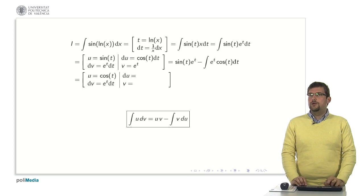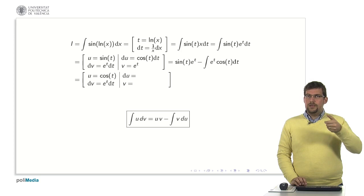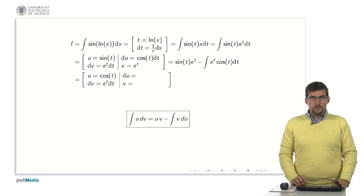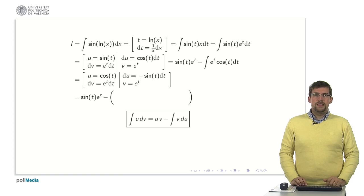The integration by parts is the same again. We would take the u the cosine and the dv would be the exponential. It is important that when we apply integration by parts twice we do not make the change backwards. Let's not put now the cosine in the v and the exponential in the u since we would be in a way undoing what we had already done.